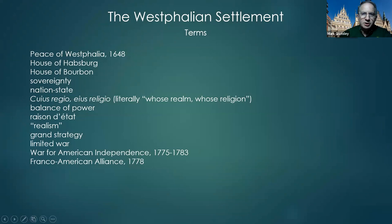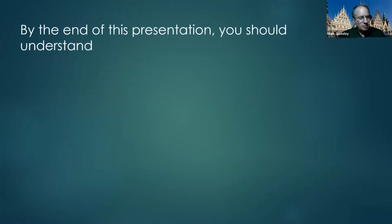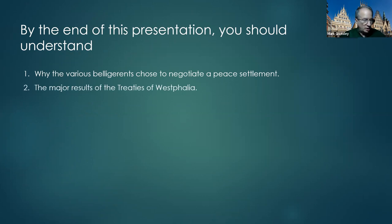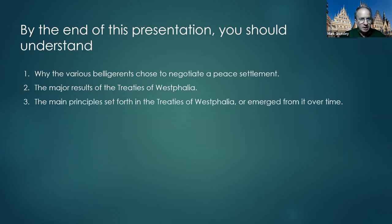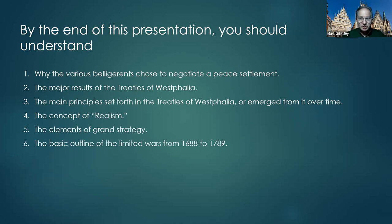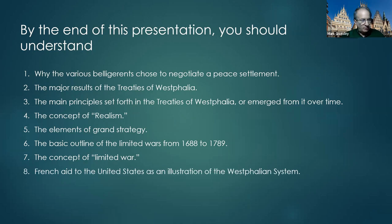After this presentation, by the end of it, you should know why the various belligerents — all the countries involved in the Thirty Years' War — chose to negotiate a peace settlement. The major results of the three treaties of Westphalia, the main principles set forth in or emerging from the treaties, the concept of realism, the elements of grand strategy, the basic outline of the limited wars that occurred between 1688 and 1789, the concept of limited war, and French aid to the United States as an illustration of the Westphalian system.